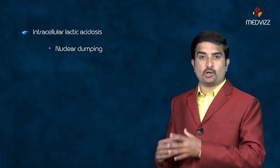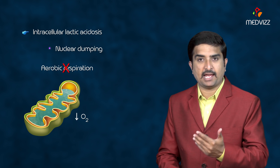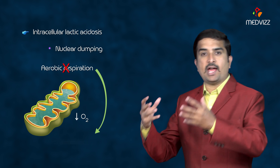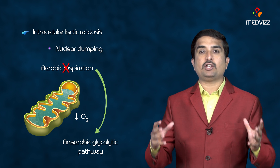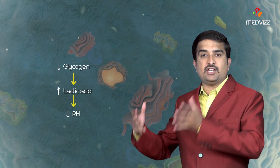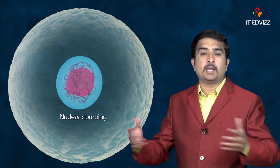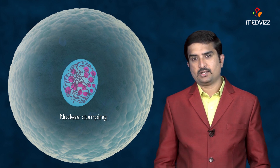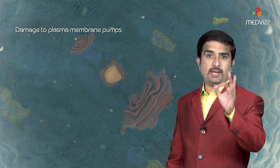The second event is intracellular lactic acidosis, which mainly causes nuclear clumping called pycnosis. Aerobic respiration by the mitochondria fails due to low oxygen supply, triggering a switch to the anaerobic glycolytic pathway for energy via substrate-level phosphorylation. This results in rapid depletion of glycogen and accumulation of lactic acid, lowering intracellular pH, causing pycnosis.